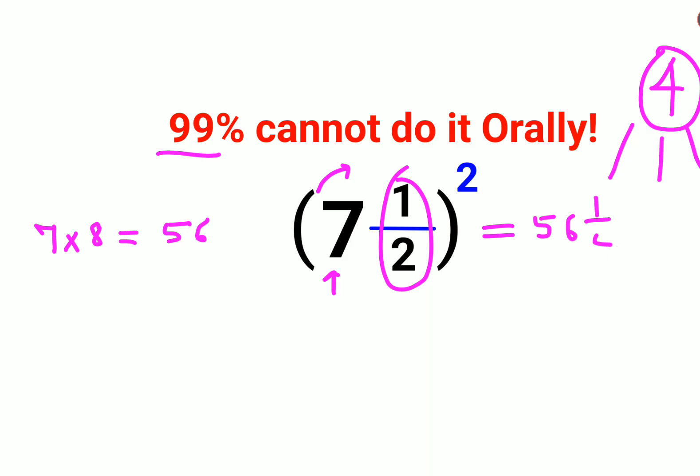that is 1/2, that is 1/4. This is so simple, it is so easy, right? So now let's try and do 9 and a half square. That is nothing but you just multiply 9 into the number next, after 9 is 10. So 9 into 10 is 90 and just do 1/4, right? You can literally do this in your head.